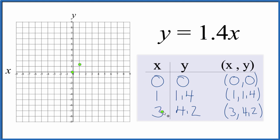And then x is 3, and y is 4.2. So we go over to 3, and we go up to 4, a little past 4. And you can see we have our line here.